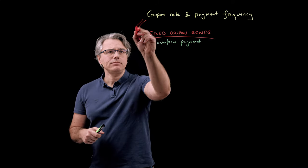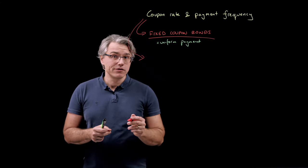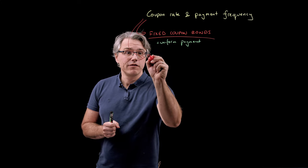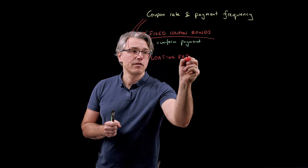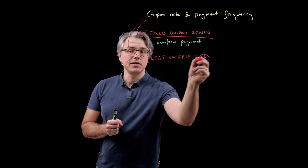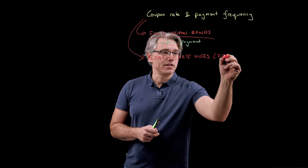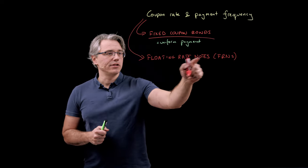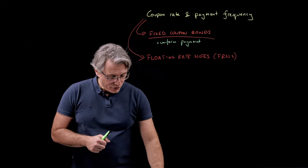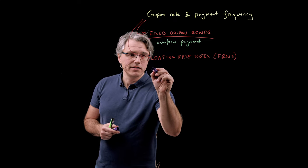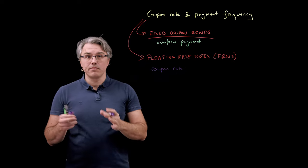The second type is floating coupon bonds, which the curriculum calls floating rate notes. Floating rate notes — which basically means bonds that have a floating or variable coupon — are often associated with the abbreviation FRN. In this case the coupon rate is going to be expressed as a formula, seeing as it varies from period to period.